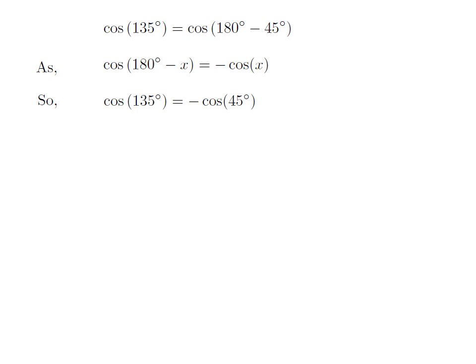Let us apply the above identity for cosine of 135 degrees. Here x is 45 degrees, so cosine of 135 degrees is equal to minus cosine of 45 degrees.